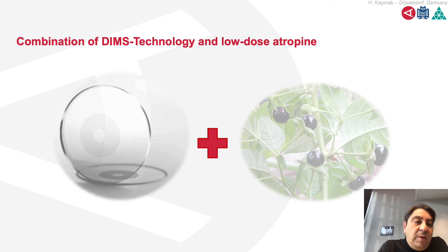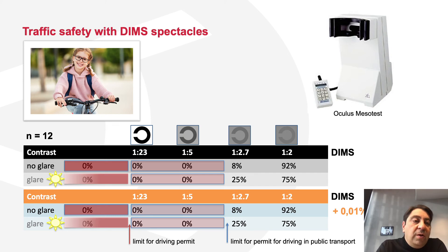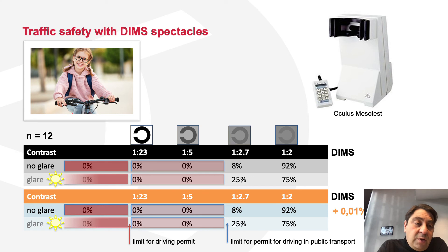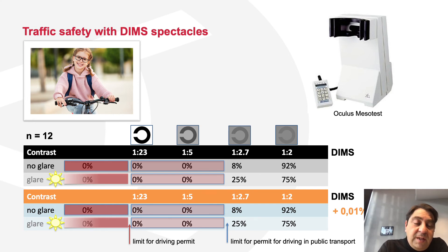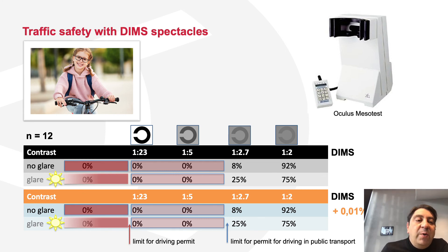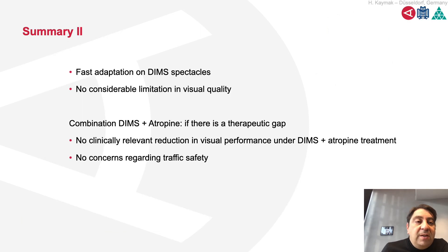The next step will be the combination of DIMS technology and low-dose atropine. It was very important for me to assess traffic safety with DIMS technology. We tested using the MESO test, measuring contrast sensitivity under different conditions — with and without CLAR and with the combination of DIMS and atropine. The results show it is within the limit required for driving in public transport, with or without atropine — confirming a very safe treatment option.